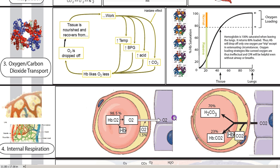Step three is oxygen and carbon dioxide transport — we'll be talking about hemoglobin, and we'll also combine step four, internal respiration, which is when oxygen is released from hemoglobin into the tissue — out of the blood and into the tissue. Many factors that affected external respiration also affect internal respiration, including Henry's Law and Dalton's Law regarding how much gas there is and how likely it is to go into solution.